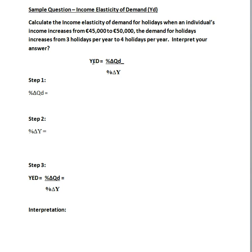The first thing we need to do is identify our formula. The formula for income elasticity of demand is equal to the percentage change in quantity demand divided by the percentage change in income. The most straightforward way to apply this formula is to break it down into three steps.